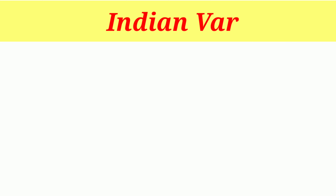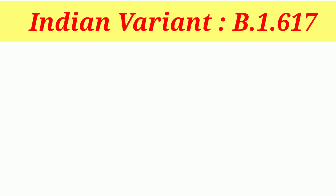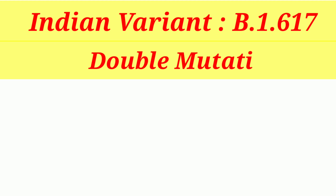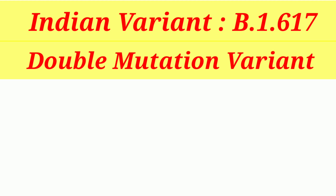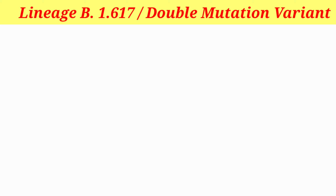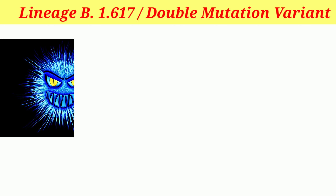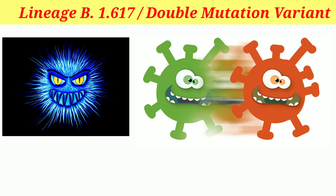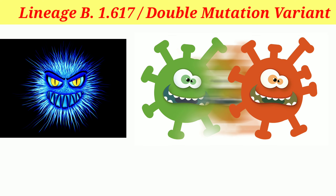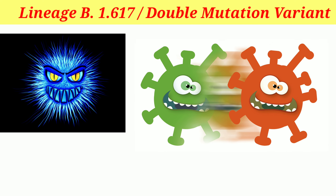The lineage B1617 variant was found in Maharashtra state of India. It is said that this variant is a merger of two separate mutations from two separate variants of the coronavirus.